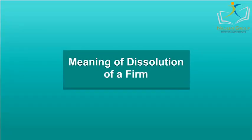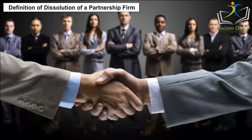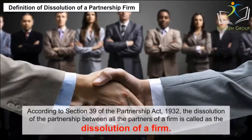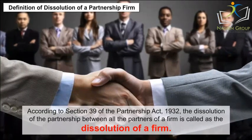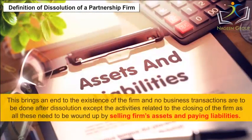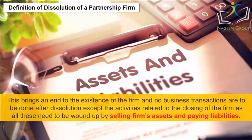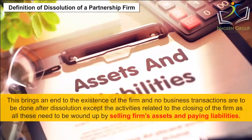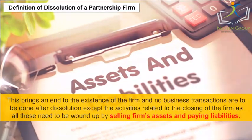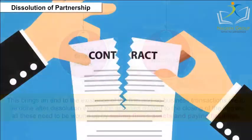Meaning of Dissolution of a Firm: According to Section 39 of the Partnership Act, 1932, the dissolution of the partnership between all the partners of a firm is called the dissolution of a firm. This brings an end to the existence of the firm and no business transactions are to be done after dissolution, except activities related to closing the firm, as all these need to be wound up by selling firm's assets and paying liabilities.